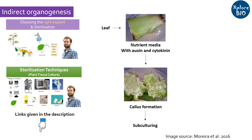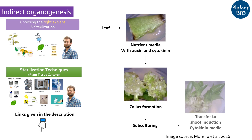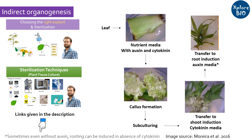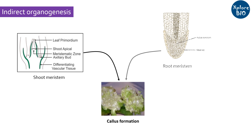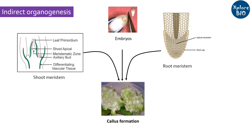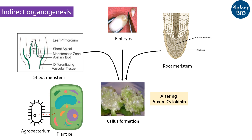After several weeks, when the callus gains sufficient mass, it is shifted to a shoot induction media which is rich in cytokinin. A few weeks later, it is shifted to auxin-rich media for root induction. This way, a whole plant can be regenerated. Callus can also be produced from shoot or root meristem, embryos, and other explant tissues with different auxin-cytokinin ratios or utilizing any one of the two. Generally, for most genetic transformations, callus serves as an important stage for agrobacterium-mediated transformation and regenerating transgenic plants.